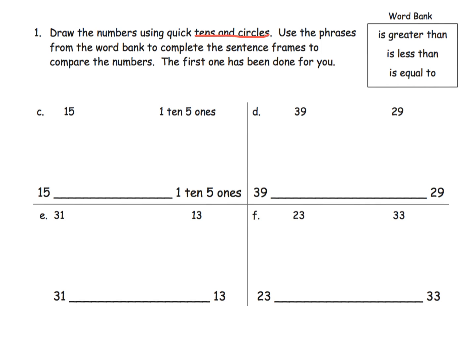We're going to use quick tens to draw each of the numbers and then we're going to use this word bank over here to complete the sentence. So here's 15 and then we have one 10 and five ones. So first, well let's do the quick tens for this one because this one is the easiest.